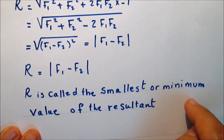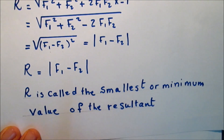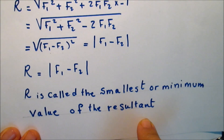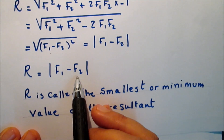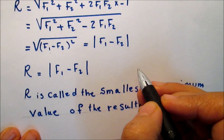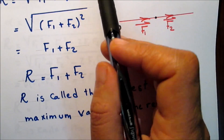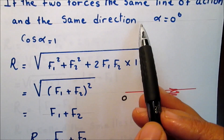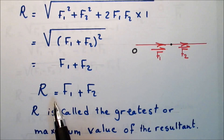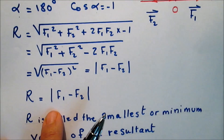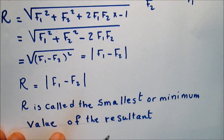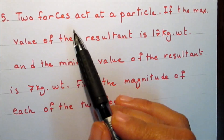In this case R is called the smallest or minimum value of the resultant. So if the two forces have the same line of action in opposite directions, R equals F1 minus F2 where F1 is greater than F2. If they are in the same direction, R equals F1 plus F2, which is the maximum value.